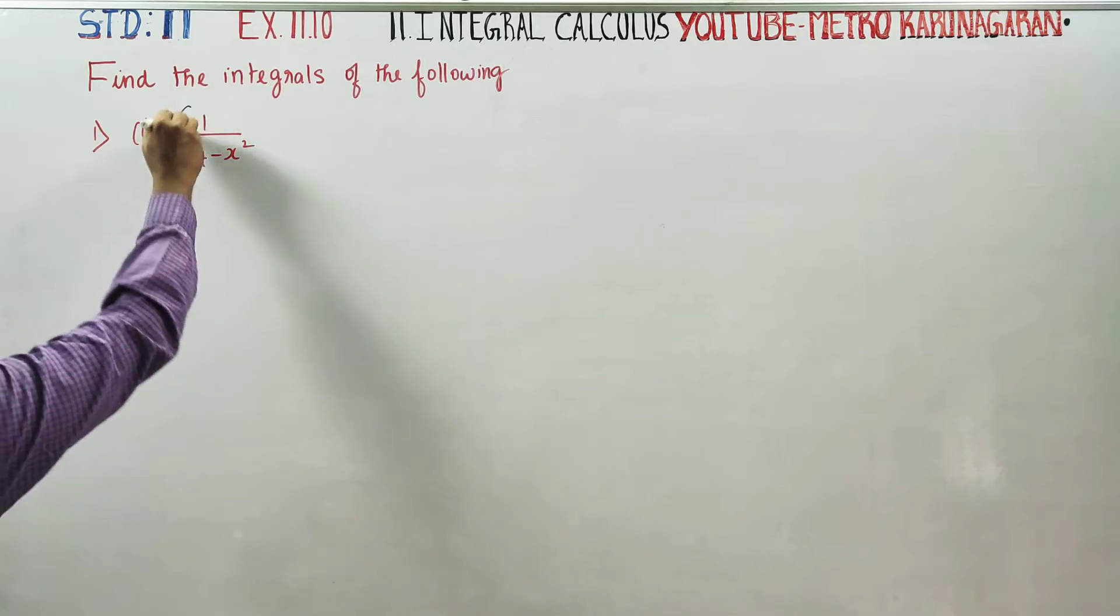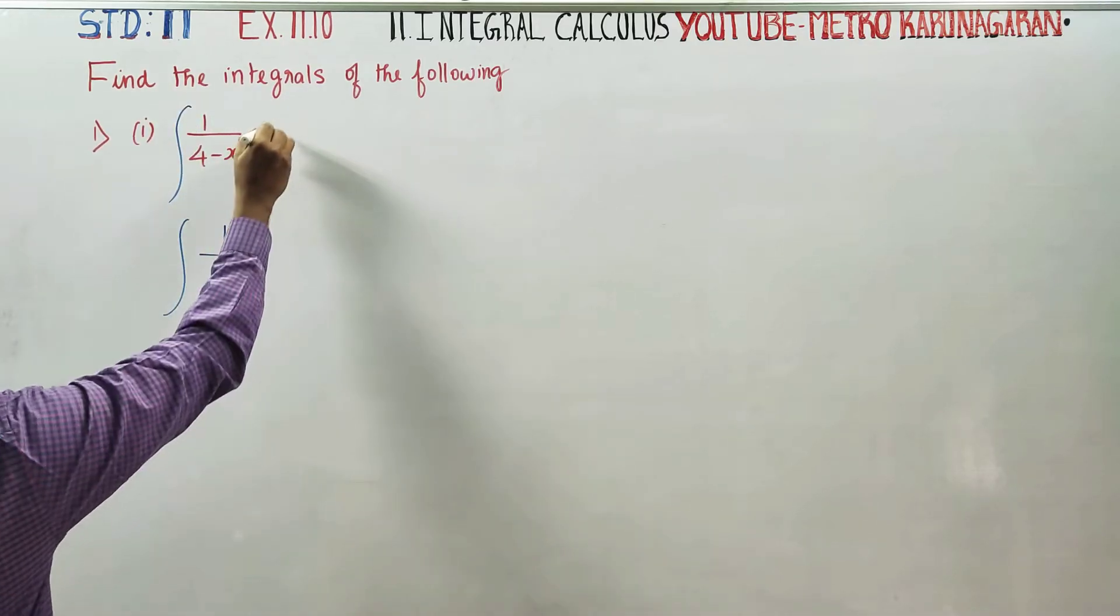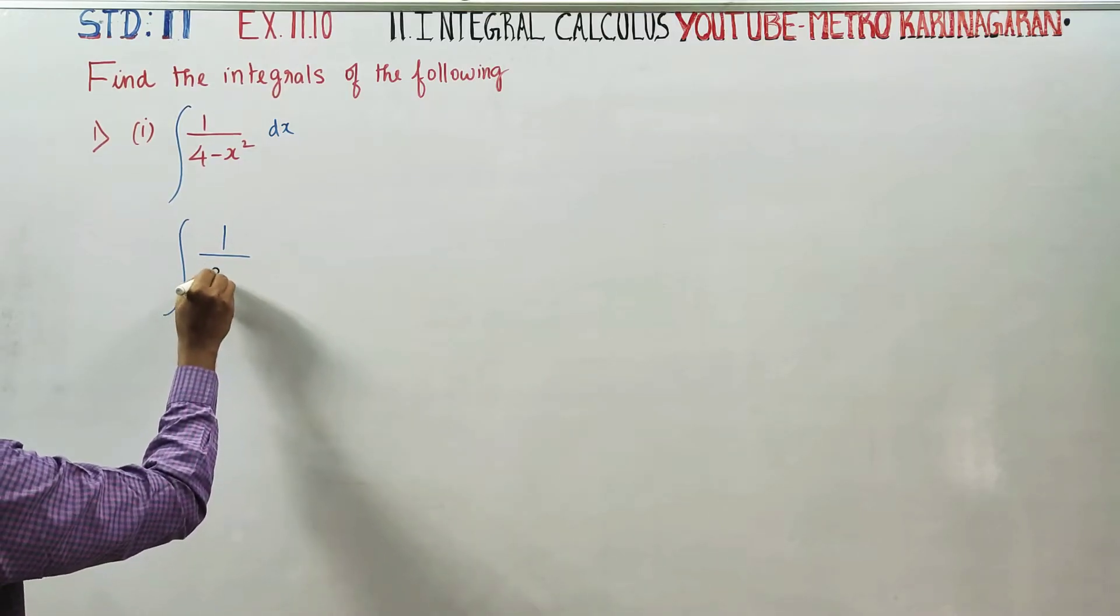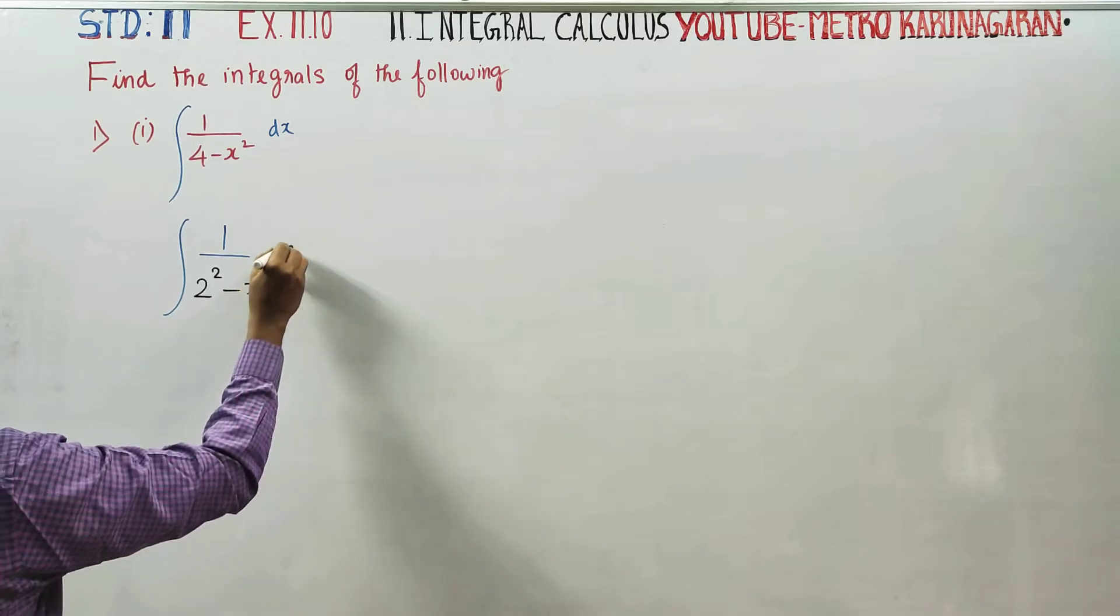Integration of 1 by 4 minus x square dx. This can be written as integration of 1 by 2 square minus x square dx.